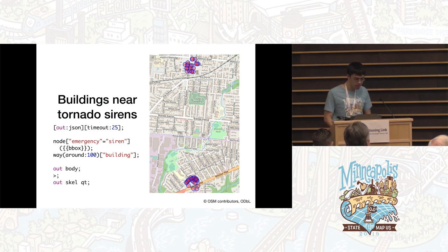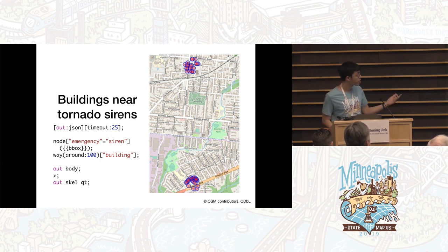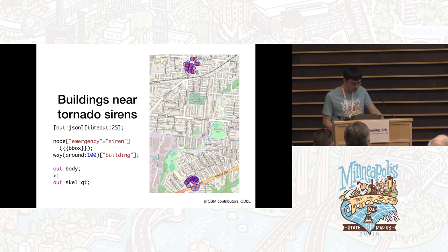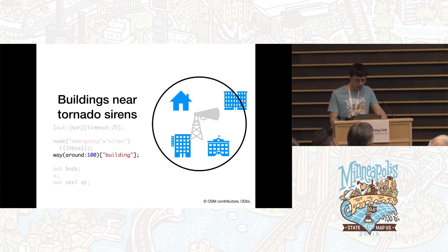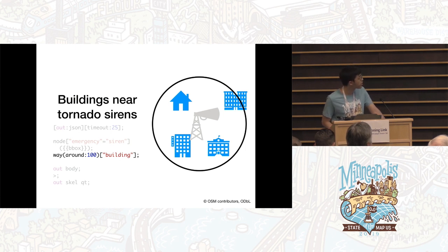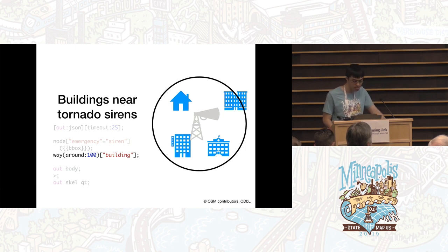In this case, I'm finding buildings near tornado sirens — and obviously the tornado sirens don't have names. First it finds the siren nodes: emergency equals siren. Then it finds the building ways within 100 meters of those nodes, and you can customize the distance.